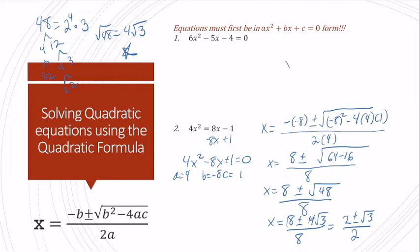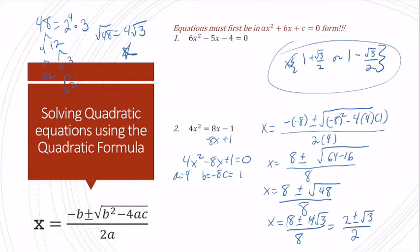I'll simplify this fraction — each term has a factor of 4 — giving 2 plus or minus the square root of 3 over 2. So my solution set is 1 plus the square root of 3 divided by 2, or 1 minus the square root of 3 divided by 2. This is our solution set using the quadratic formula.